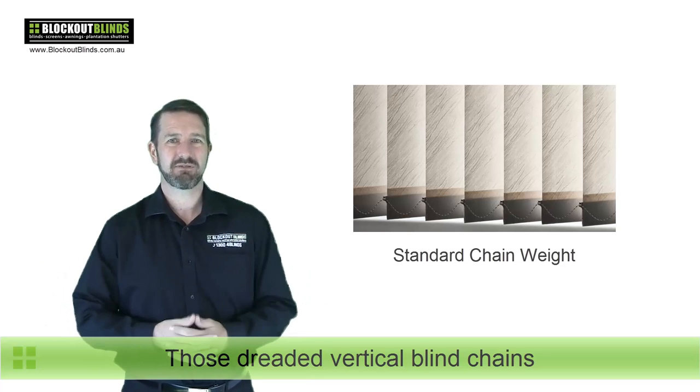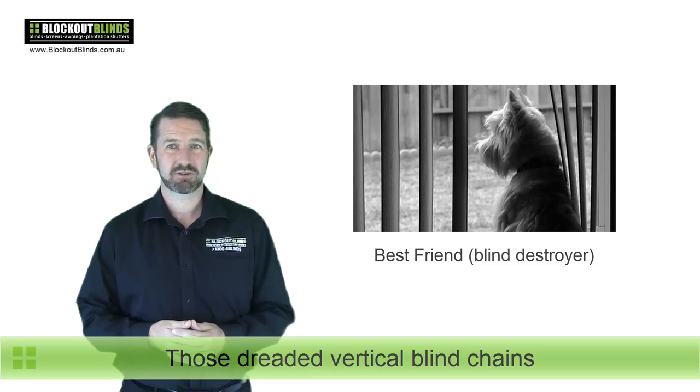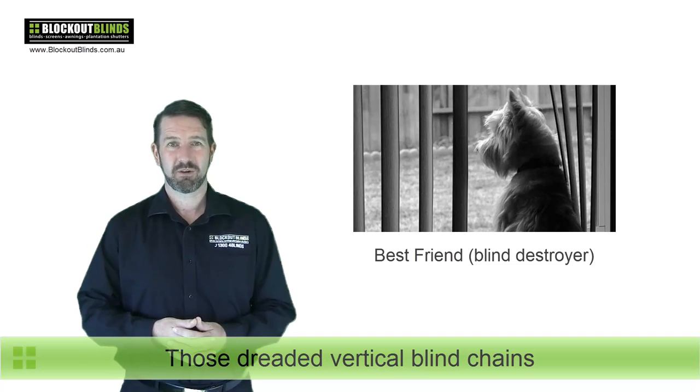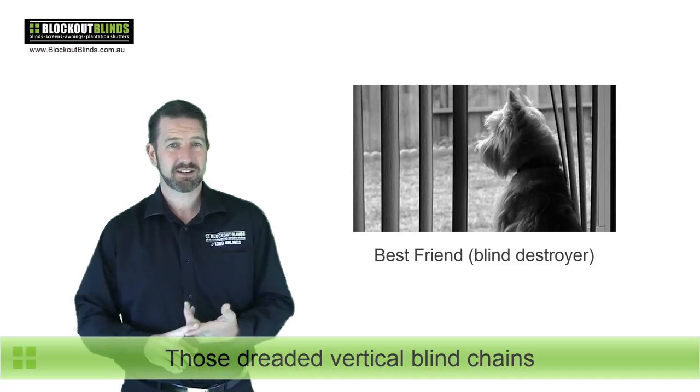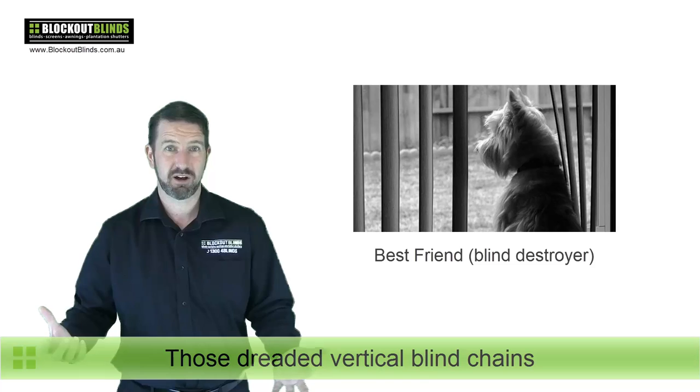But what if you have a lovely little fella like you can see in this photo who loves to sit at the back door and wait for you to come in when you get home from work? If your vertical blinds have chains, this little fella can't do that because he's either going to wreck the blind or he's going to get all tangled up and wreck the blind.